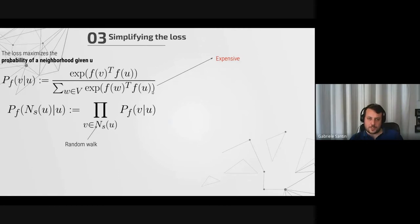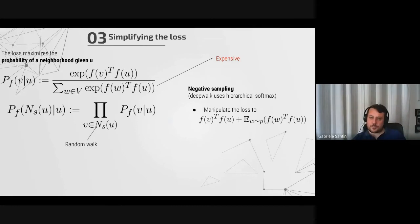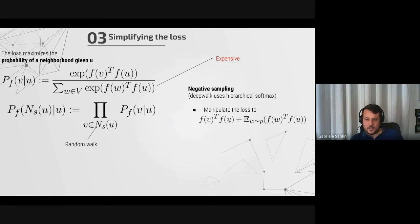The problem is that this normalization division is very expensive because it requires computing this quantity for every node in the graph. Every time you want to evaluate this term you need in principle to evaluate it for every node. Node2Vec solves this via negative sampling — DeepWalk uses another approach called hierarchical softmax. This is actually another difference between Node2Vec and DeepWalk.